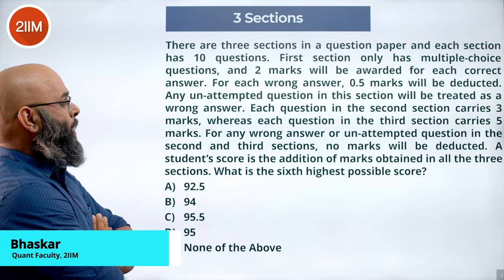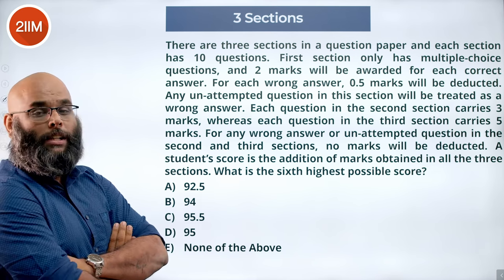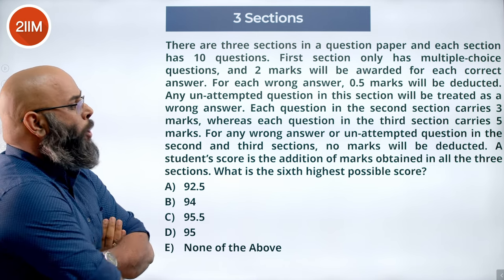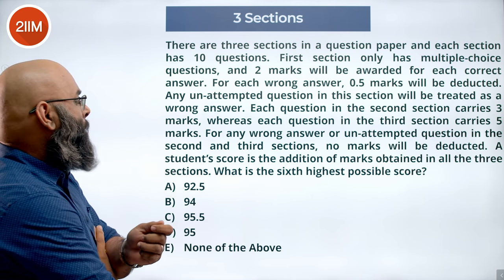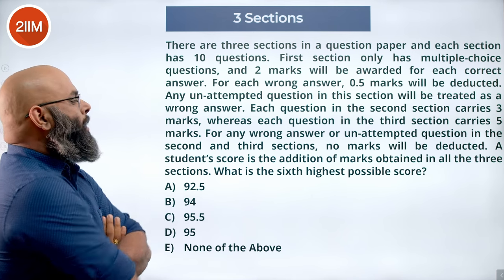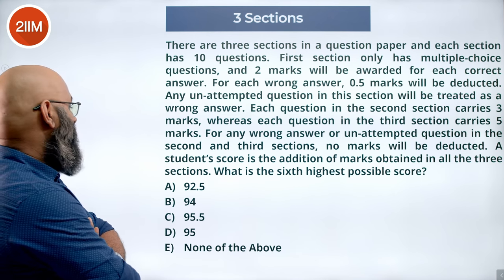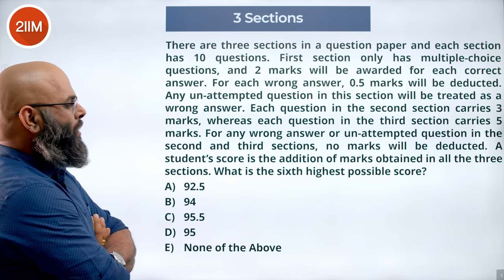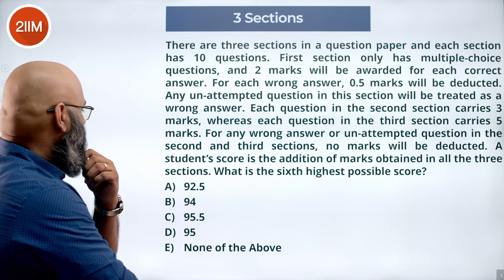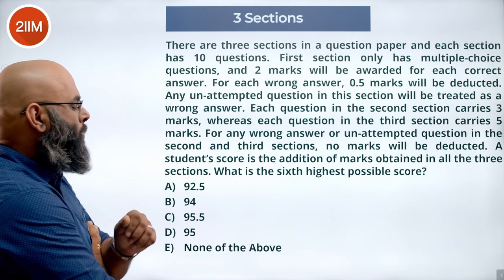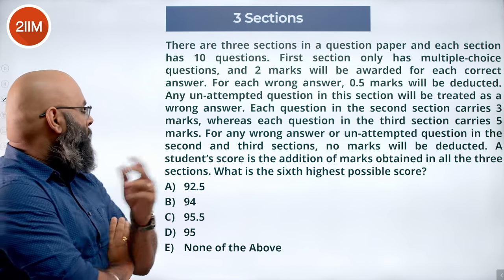There are three sections in the present paper and each section has 10 questions. The first section only has multiple choice questions and two marks will be awarded for each correct answer. For each wrong answer, 0.5 marks will be deducted. Any unattempted question in the section will be treated as a wrong answer. Each question in the second section carries 3 marks whereas each question in the third section carries 5 marks. For any wrong answer or unattempted question in the second and third sections, no marks will be deducted. A student's score is the addition of the marks obtained in all three sections.